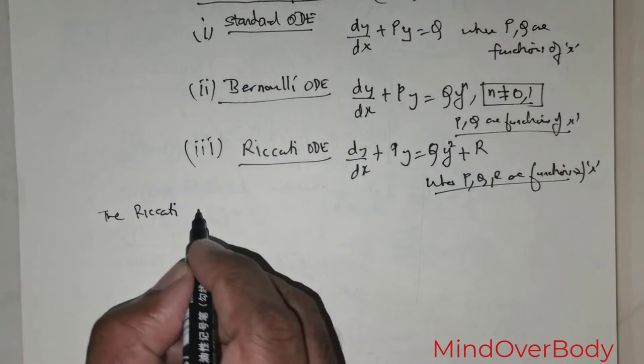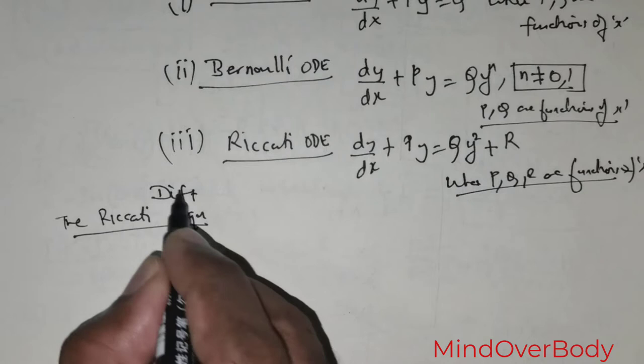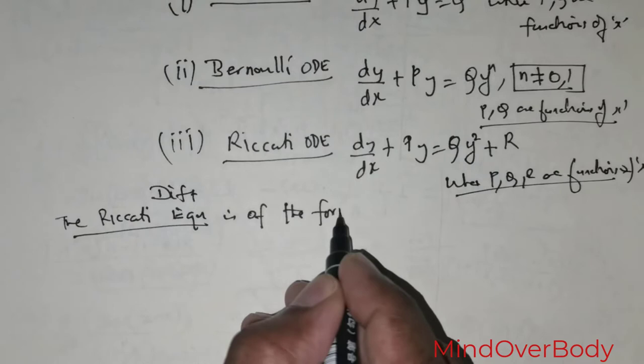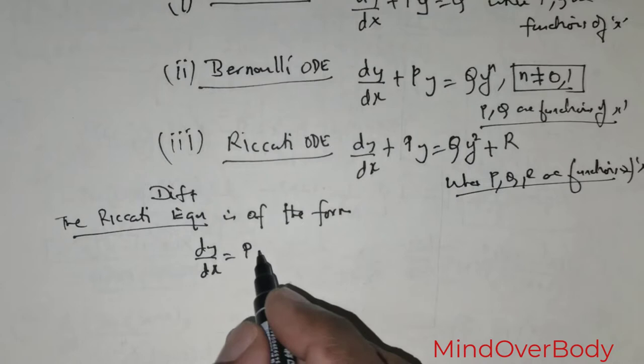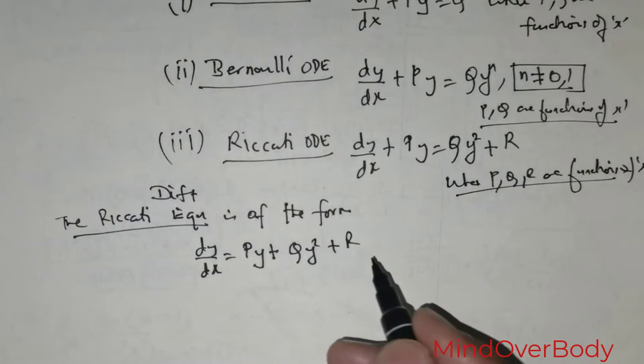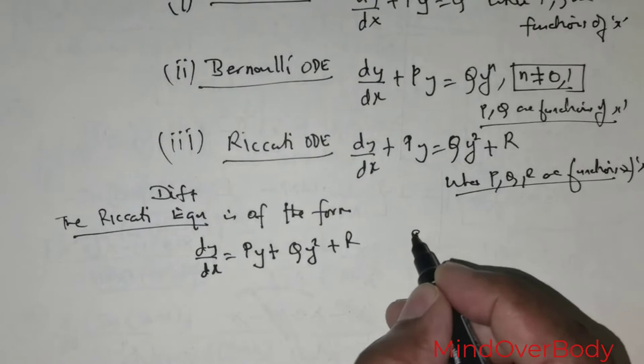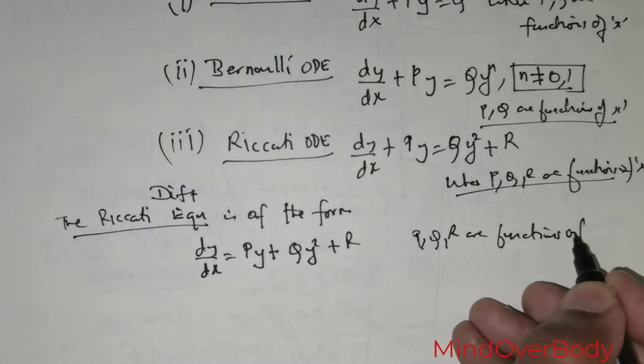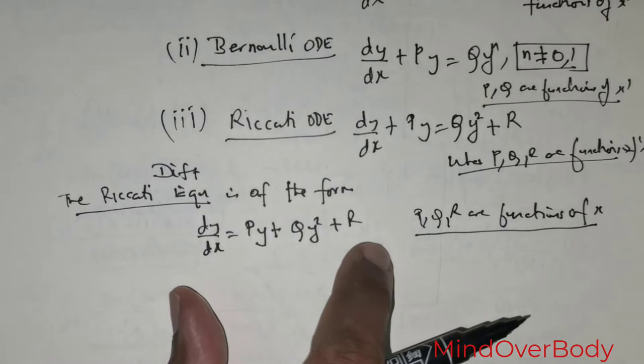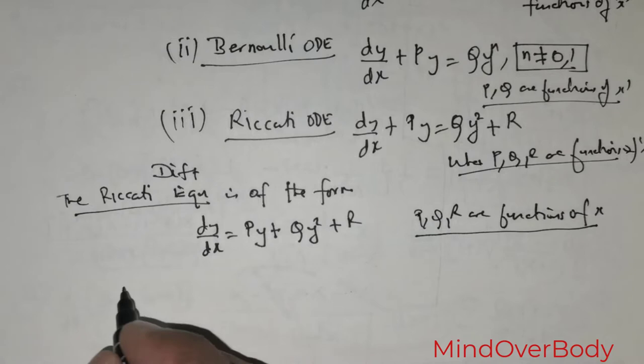The Riccati differential equation is of the form dy/dx = p(x)y + q times y squared + r, where p, q, r are functions of x. This is the standard form we will be using, and this is the pattern we will compare any given equation to.